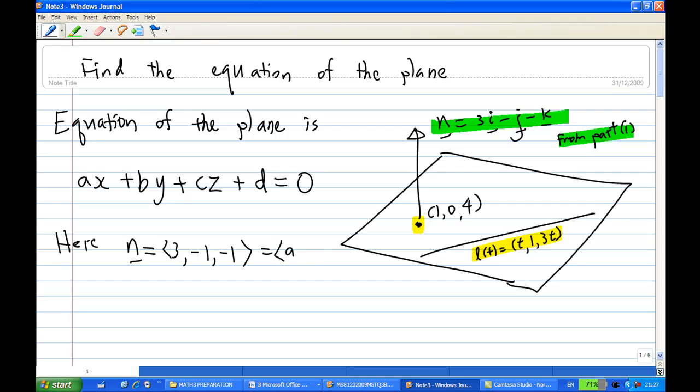Now where is my a, b, c? Here n, the normal vector, is (3, -1, -1) and this is your a, b, c. So the equation of the plane becomes, when you put in a = 3, you get 3x; b = -1, you get -y; c = -1, you get -z, plus d = 0.